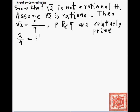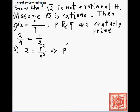For example, 2 over 4 is not relatively prime because we can reduce by 2 — divide both numerator and denominator by 2. So p and q are relatively prime. Now let's square both sides: we get 2 equals p squared over q squared, so p squared equals 2 times q squared. Now q is a natural number, so by the previous proof it follows that p is even.